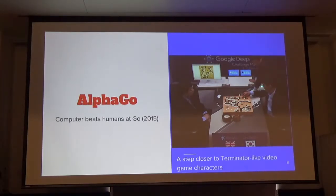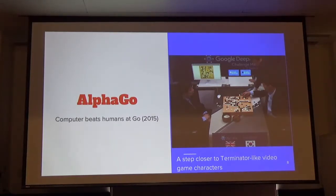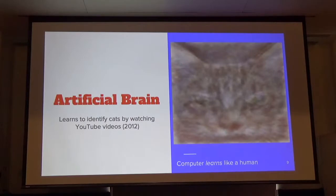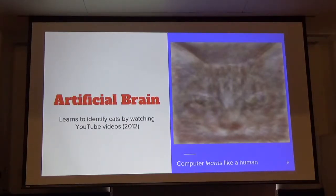I like this picture because you have the world champion at Go playing for his life, and then you have the interface between the board and the computer, who looks sort of bored. Another milestone is that Google created an artificial brain. They fed it a bunch of YouTube videos and didn't tell it what to learn — it just learned by making connections between the videos. After looking at thousands of videos, they discovered it liked watching videos of cats. This is important because it showed a machine actually learning like a human, not just processing data.